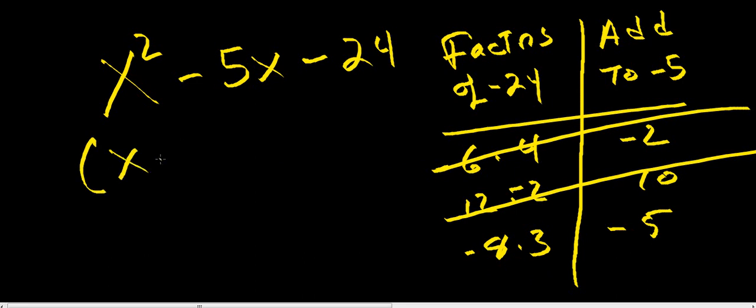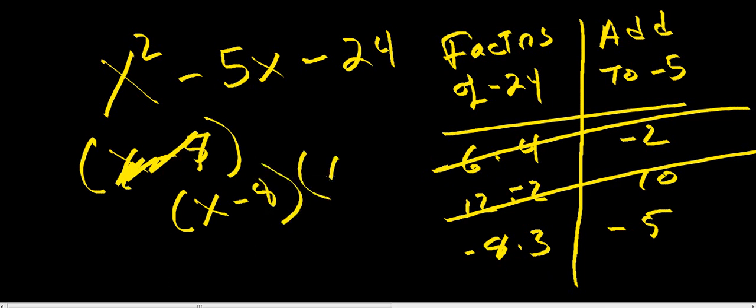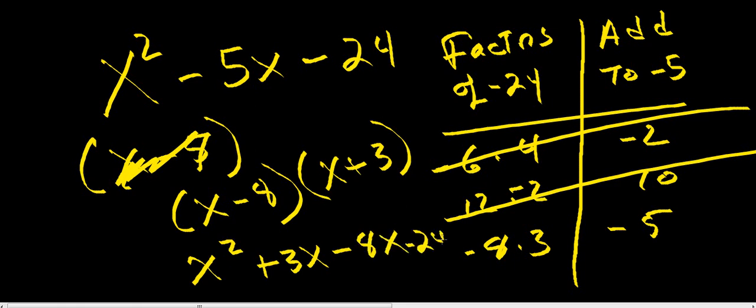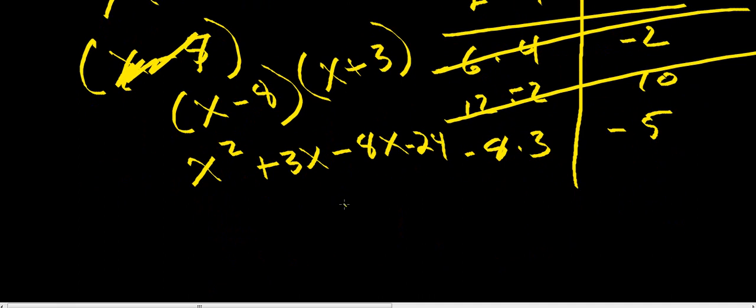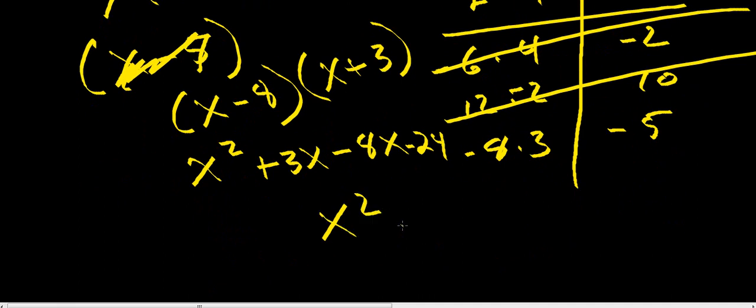So we've got x minus 5. Ah, not 5, I'm looking at the wrong column. So x minus 8 times x plus 3. Let's pull it out just to make sure. You've got x squared plus 3x minus 8x minus 24. So you've got x squared minus 5x minus 24. So we got it right.